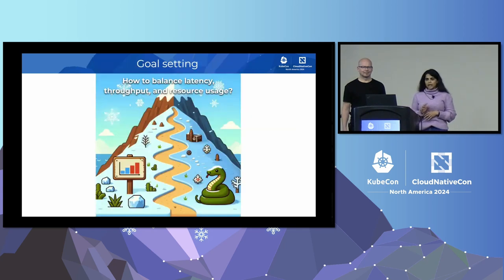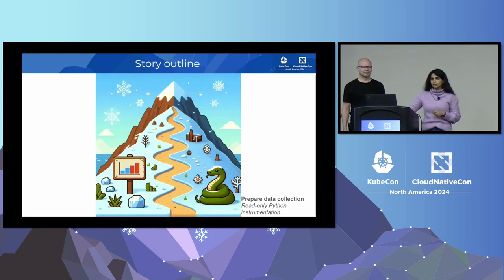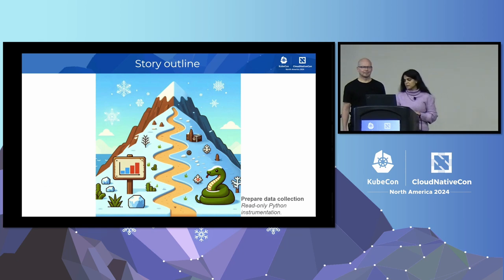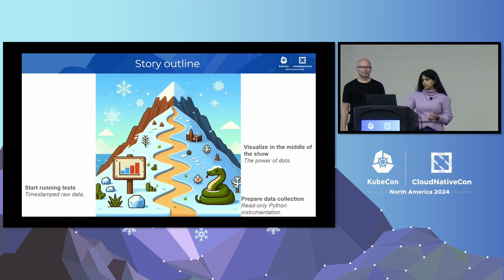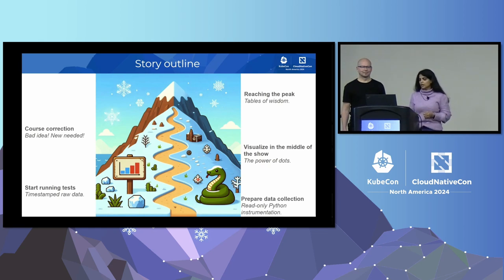The goal of our experiment is to balance latency, throughput, and resource usage such that everything is as optimal as possible. The first step is preparing the data collection. We have a third-party Python library which we are using to collect the data, and we are also augmenting it — modifying it a bit to add some instrumentation useful for our experiment results analysis. The next step is we run the tests on the instrumented data, visualize these mid-experiment to check for anything that needs correction, and then we analyze the data and draw conclusions.